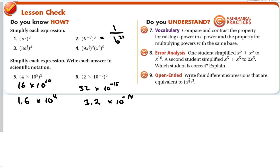One student simplified x to the 5th plus x to the 5th as x to the 10th — that's wrong. A second student simplified it as 2x to the 5th — that's correct. If this were multiplication, then adding exponents would be correct. But with addition, those are just like terms that we combine. For number nine, write four different expressions equivalent to x squared — for example, anything that reduces to x squared will work. And that's 7-3, more multiplication properties of exponents.